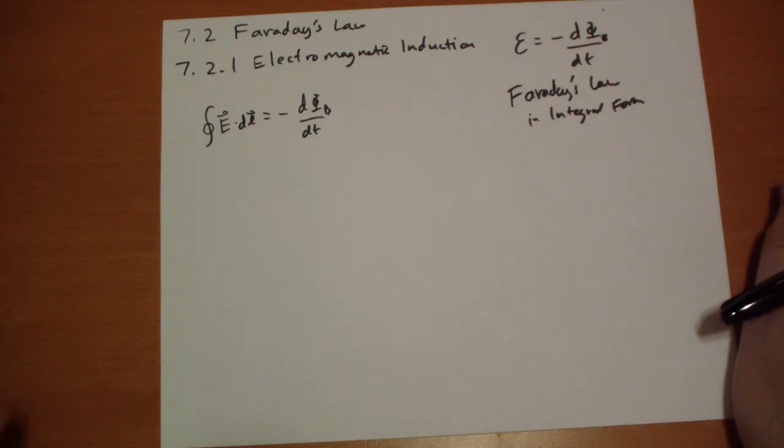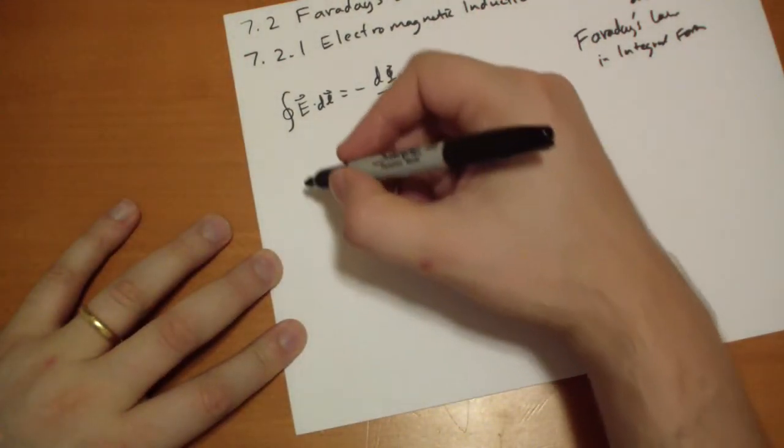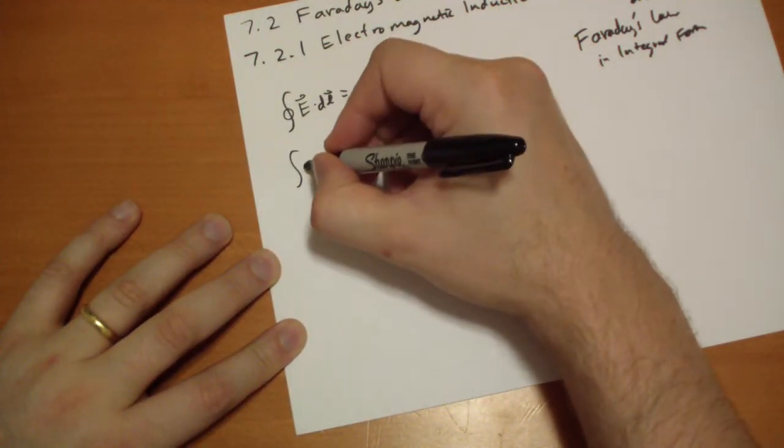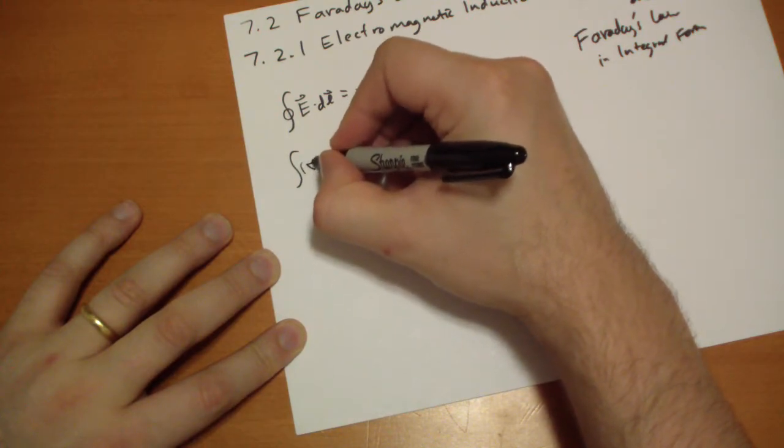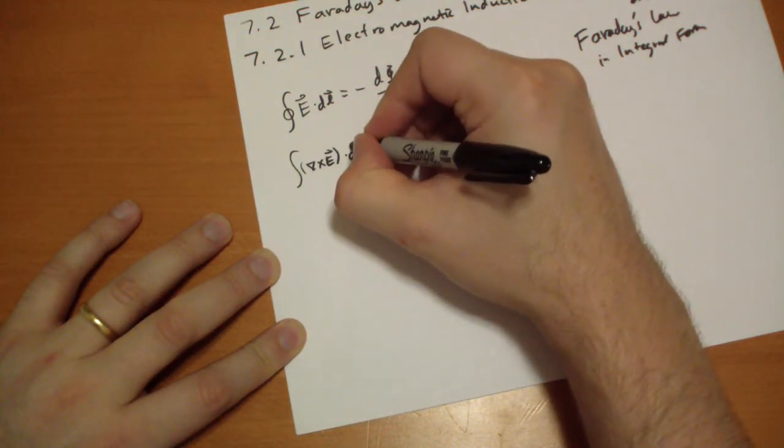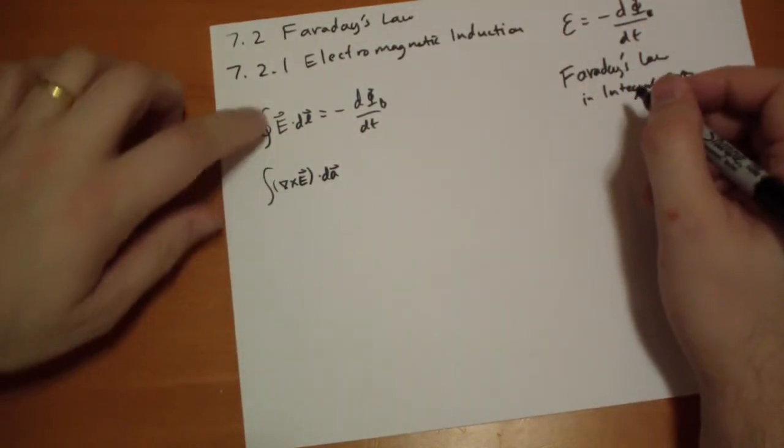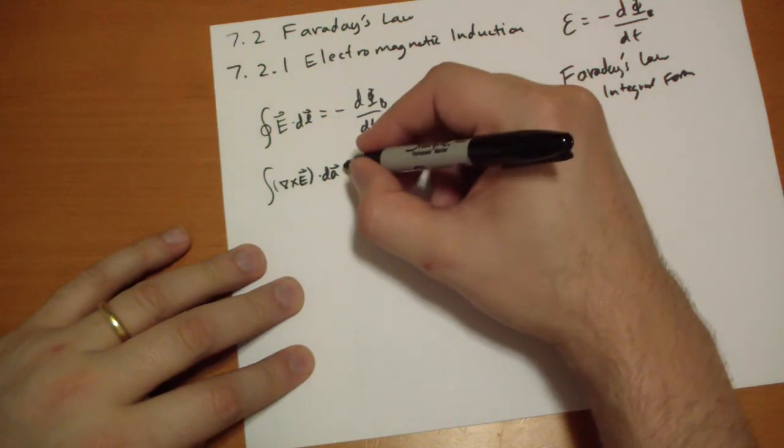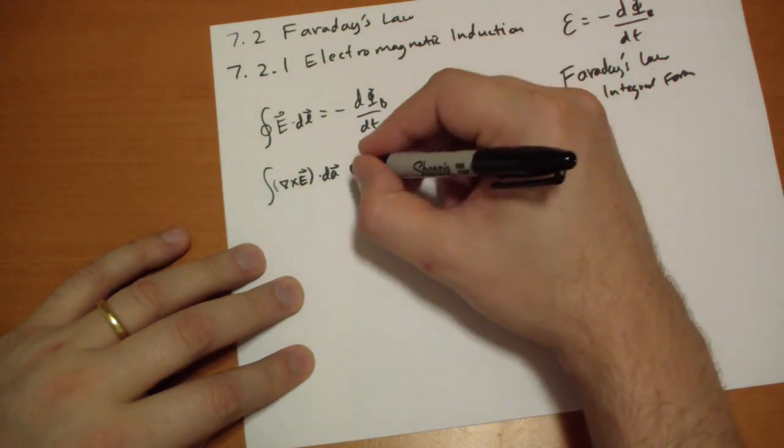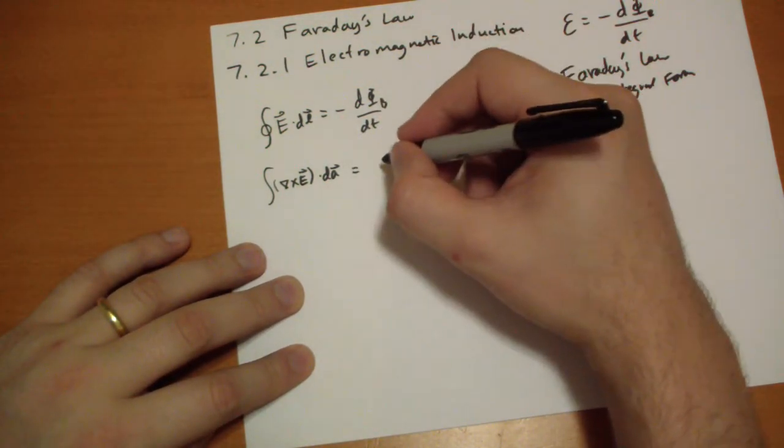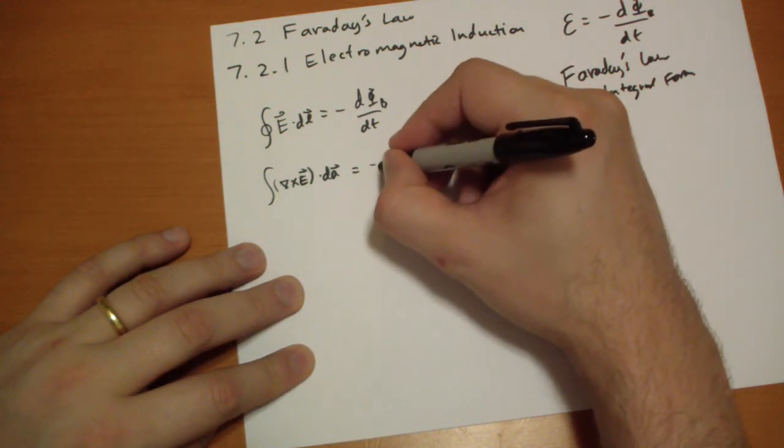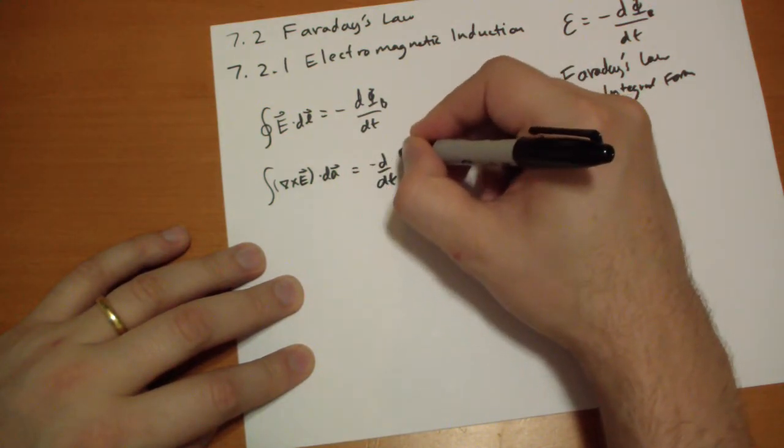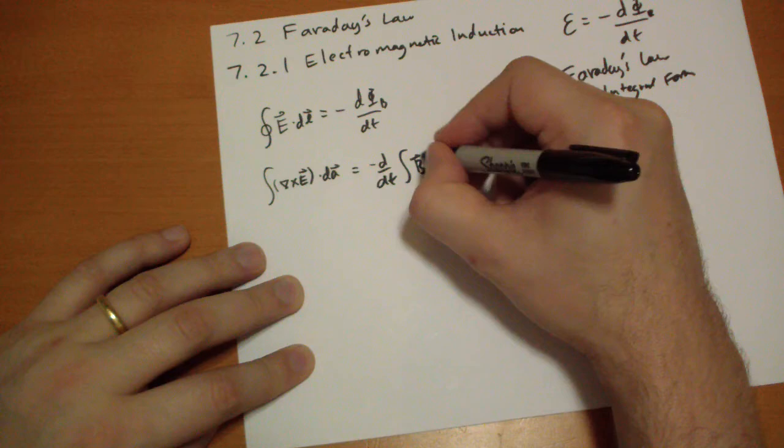We can turn this into differential form using Stokes' theorem. This becomes the surface integral of the curl of E vector dot DA, and the right side becomes the time derivative of the magnetic flux, which is B vector dot DA vector.